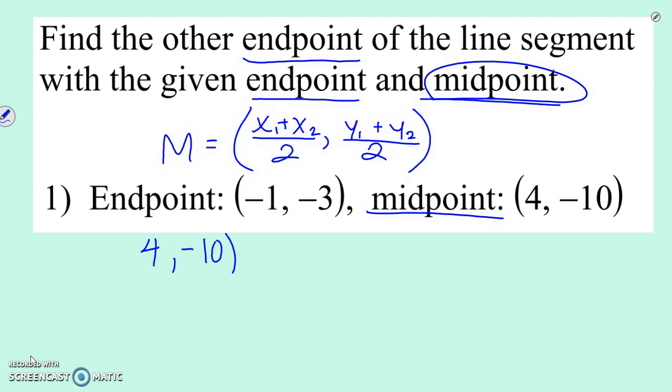4 negative 10 is equal to x plus x2, which is just minus 1 instead of x plus negative 1 over 2. y, instead of plus negative 3, I'm going to do minus 3 over 2. So we've plugged in what we know and then this remaining x and remaining y represent the endpoint that we're looking for.